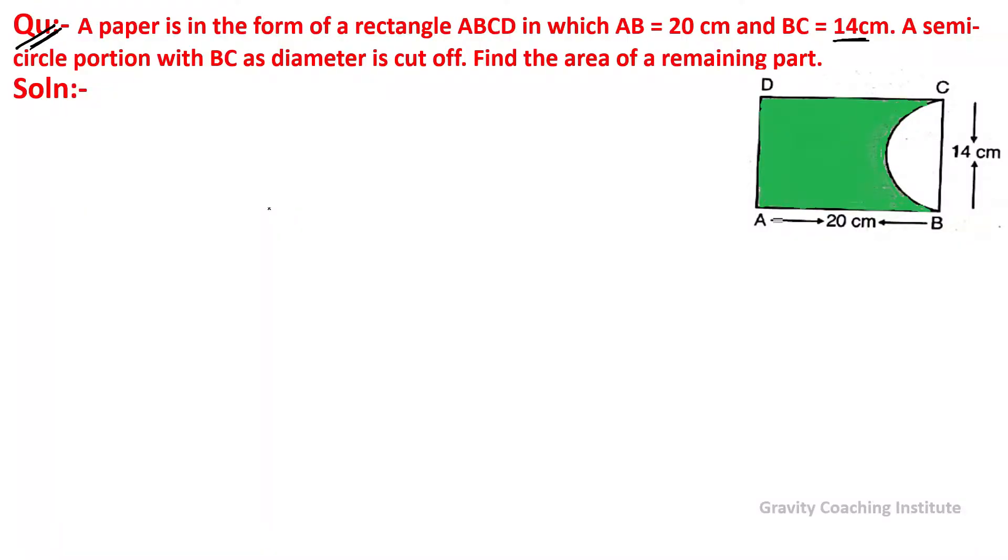A paper is in the form of rectangle ABCD in which AB equals 20 centimeter and BC equals 14 centimeter. A semicircle portion with BC as diameter is cut off. Find the area of the remaining part.